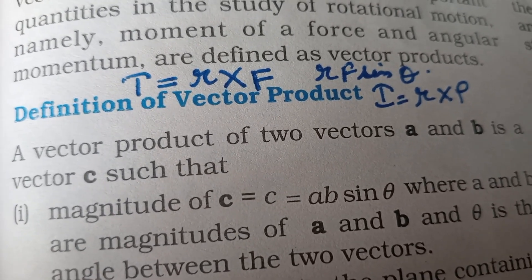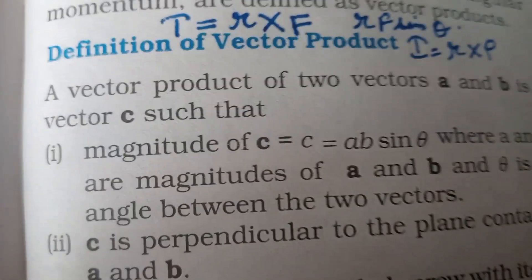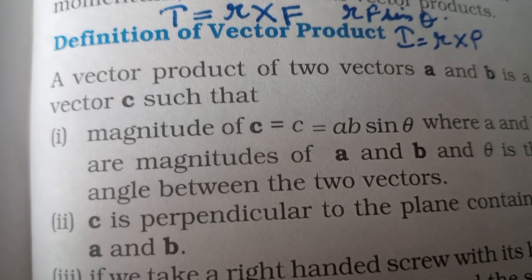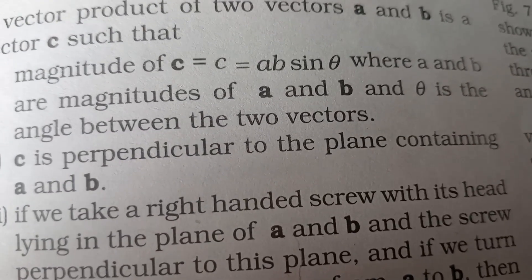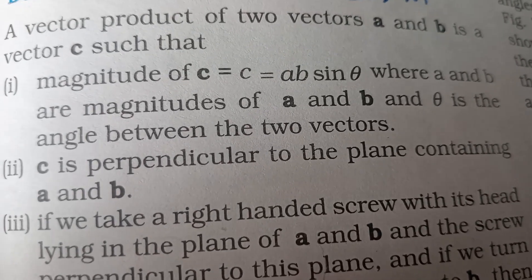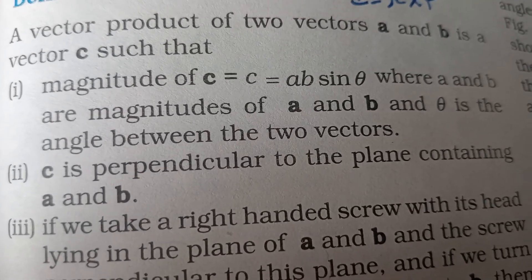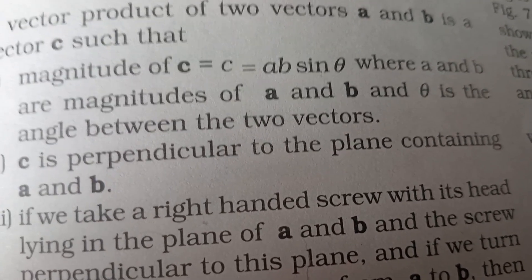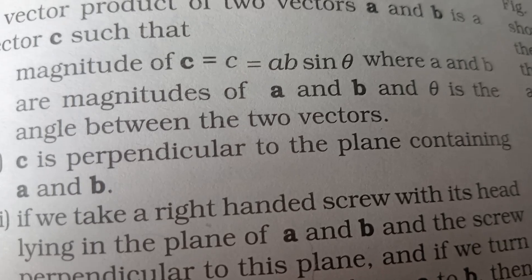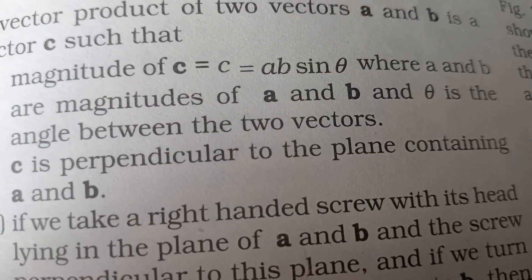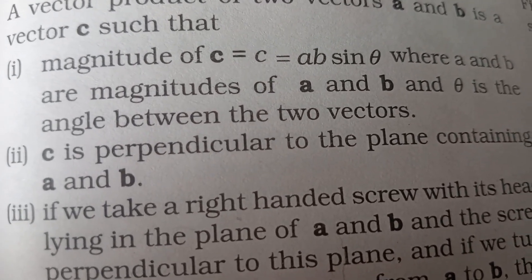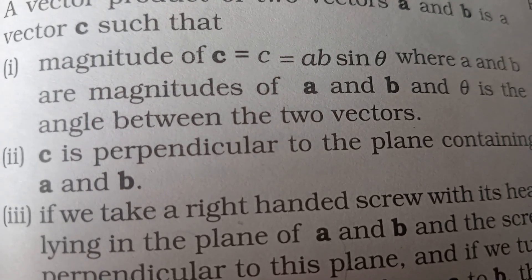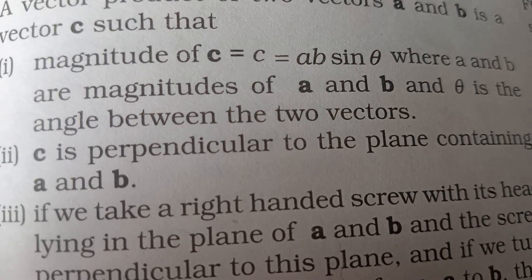Definition of vector product: A vector product of two vectors A and B is a vector C such that magnitude of C equals AB sine theta, where A and B are magnitudes of A and B, and theta is the angle between the two vectors.